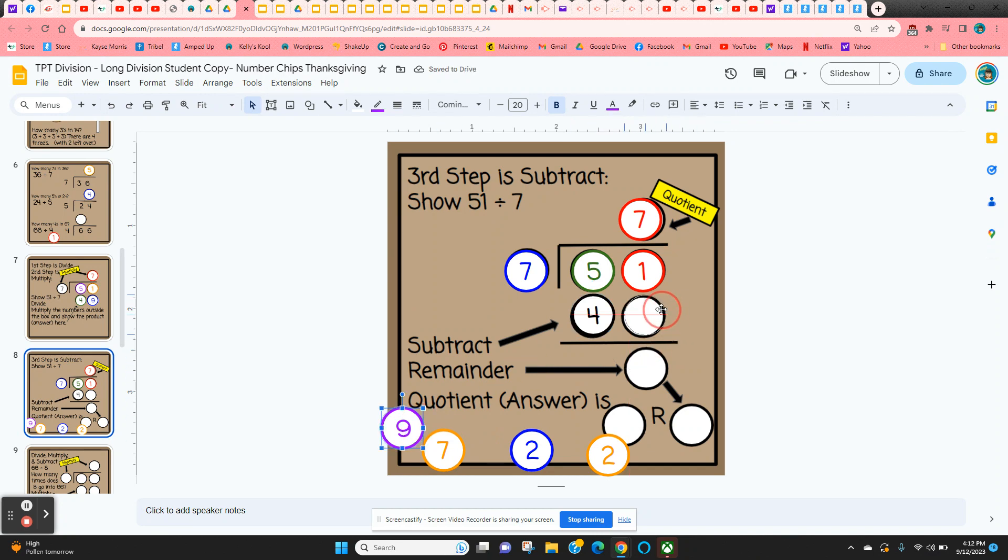And then the third step is to subtract. So when we subtract, we get 2. And that will be our remainder. So the answer is the quotient is 7. So it's 7. Remainder 2.